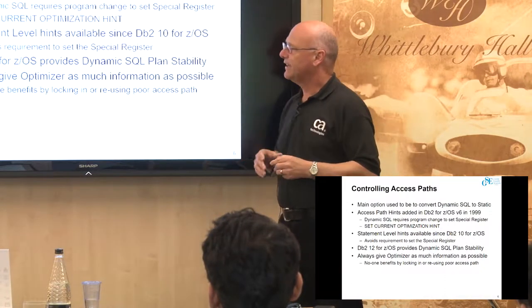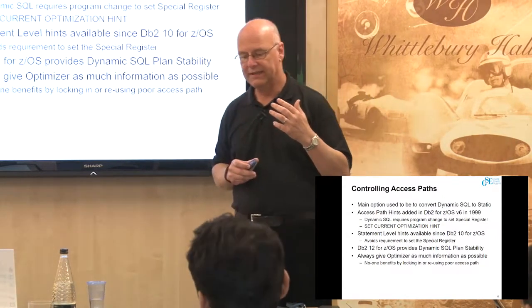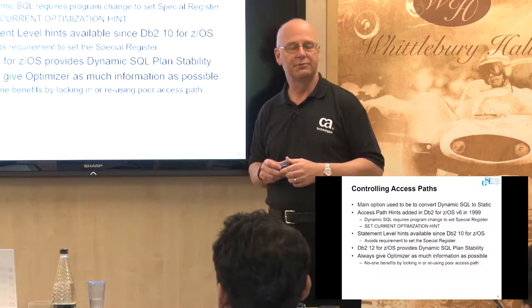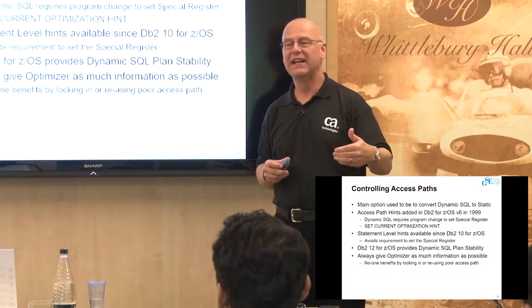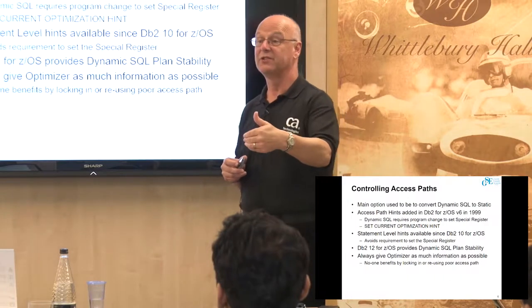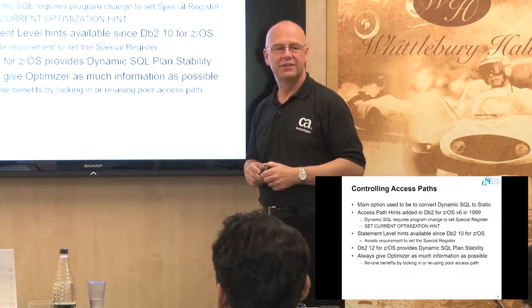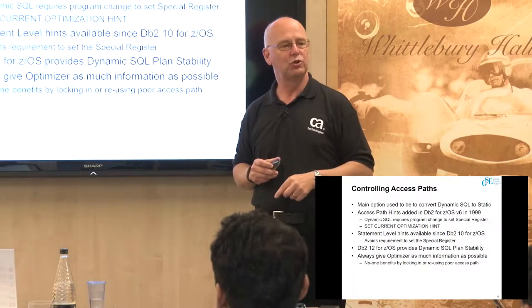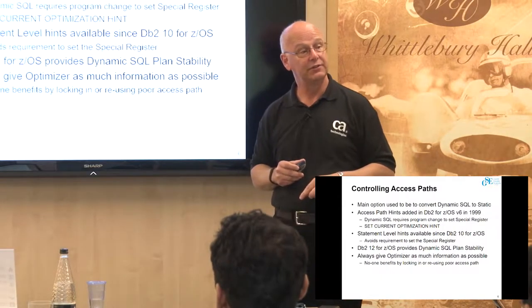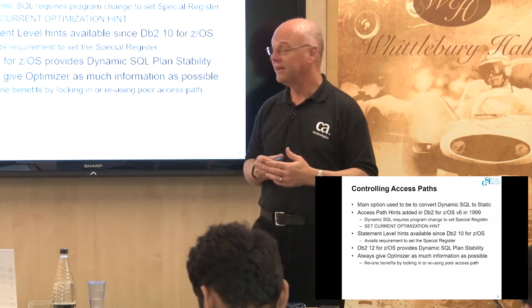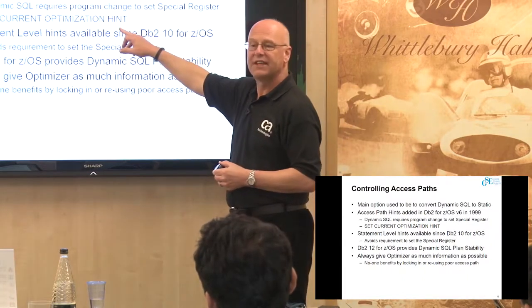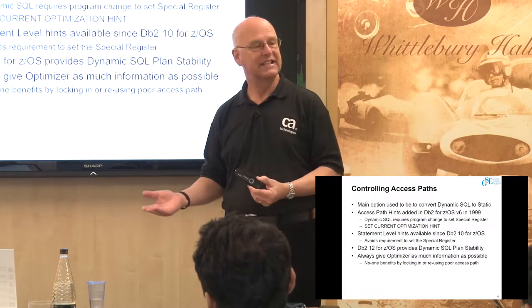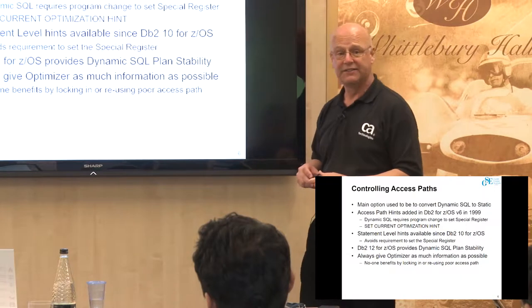You've still got to control and tune the SQL statement, write it properly, and provide all the right indexes. You've got to give the optimizer as much information as possible — none of this takes away from the need to code good SQL in the first place. One perpetual issue with access path hints is you're telling DB2 you know more about the access paths than Terry Purcell, and that's quite likely not to be true. Statement-level hints can easily go stale, and you can be using a hint without even realizing it, so you can lock in a bad access path.